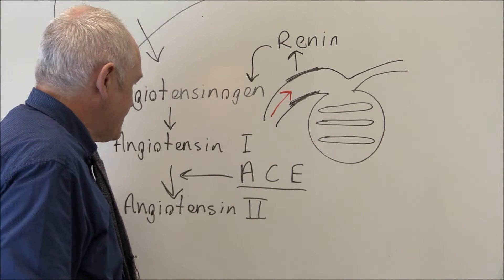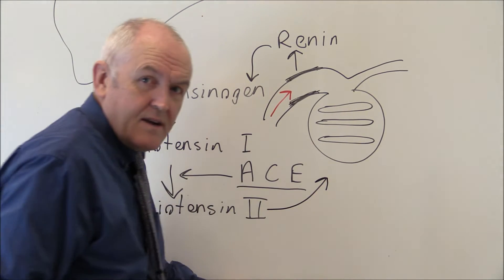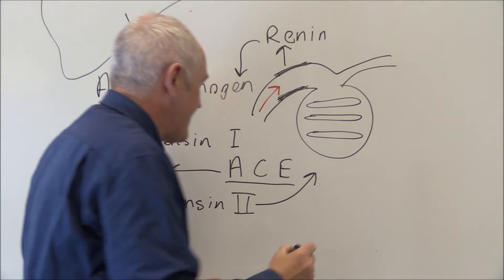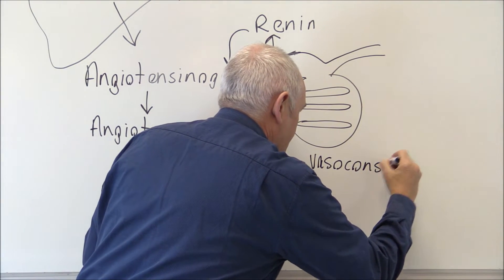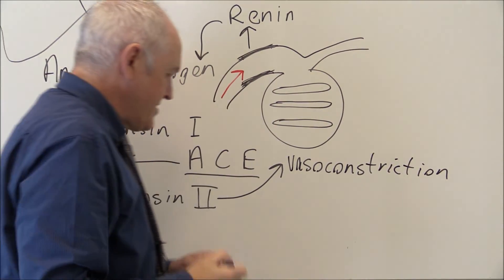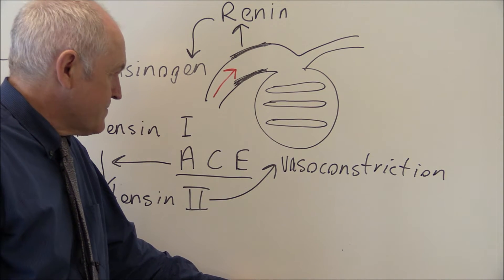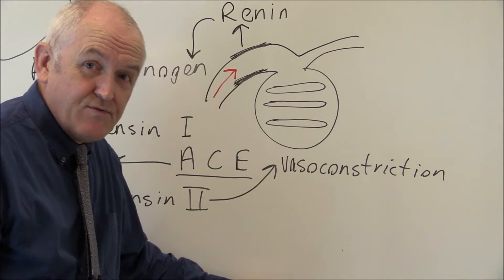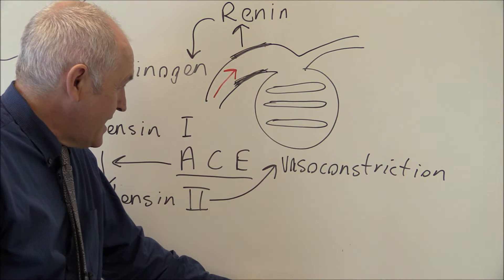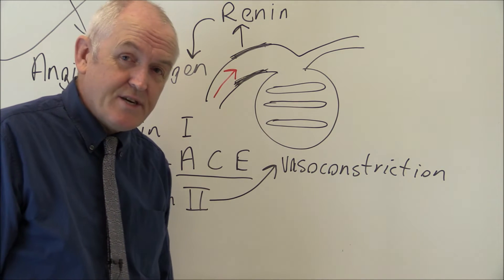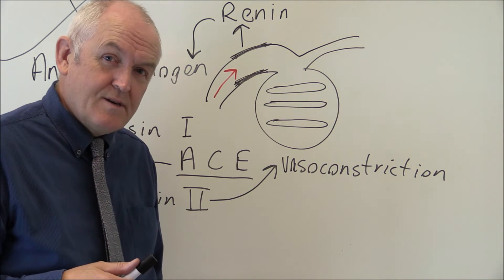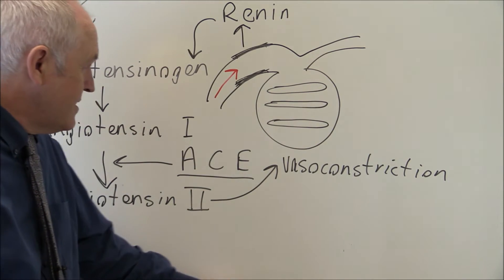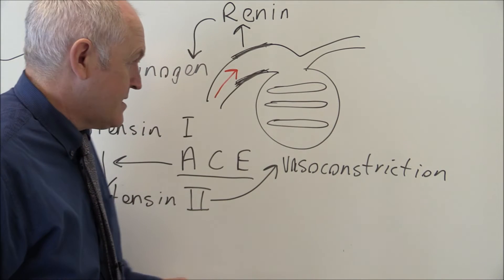Angiotensin type 2 has several effects. Firstly, angiotensin type 2 is a very potent vasoconstrictor — it vasoconstricts peripheral arterioles. If you constrict the peripheral arterioles, you're going to increase peripheral resistance. If you increase total peripheral resistance, you'll increase blood pressure, because blood pressure equals cardiac output multiplied by peripheral resistance. So the more peripheral vasoconstriction we have, the greater the peripheral resistance, and that's going to increase blood pressure.